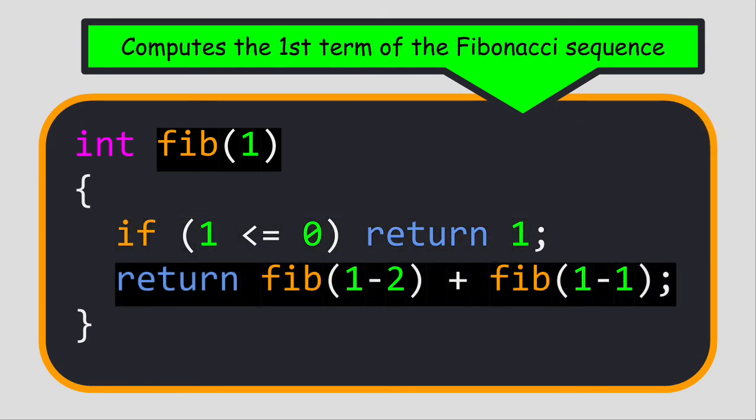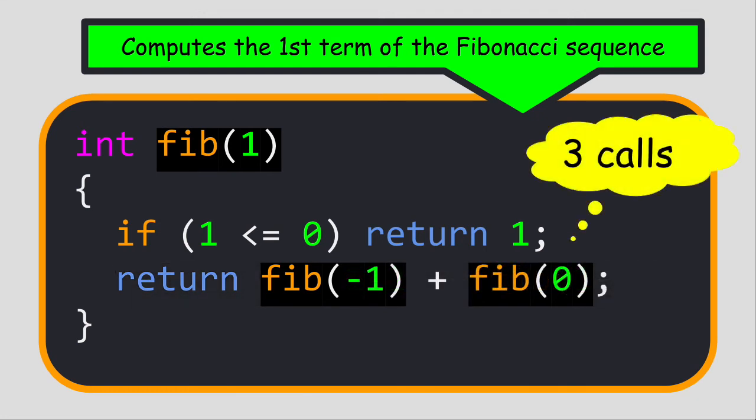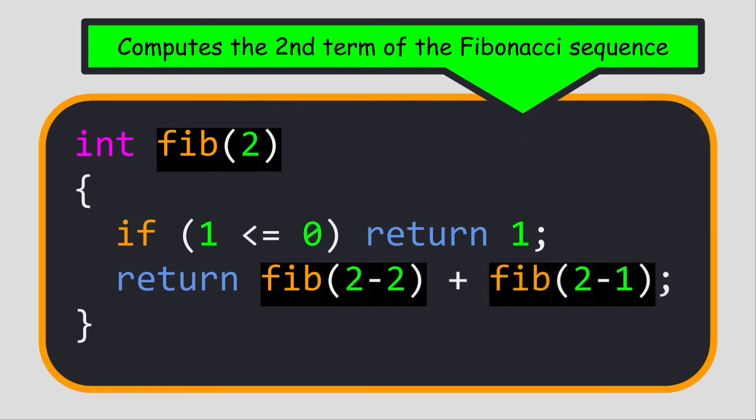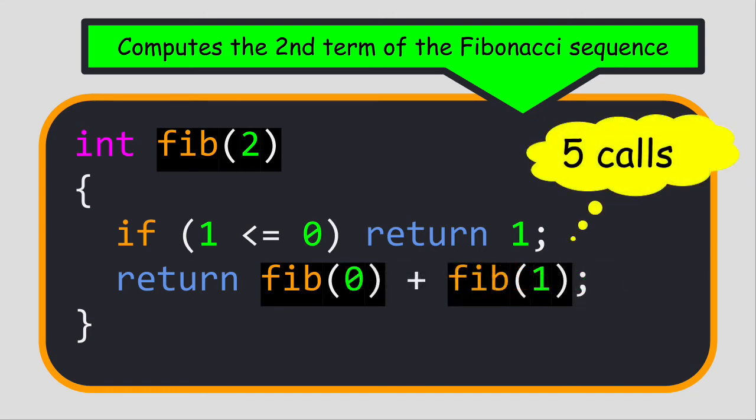If you want to compute the first term of the Fibonacci sequence, you will make a total of three calls to the function since you would enter the recursive case, which calls the function twice. If you want to compute the second term in the Fibonacci sequence, you would call the function five times.